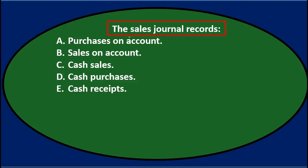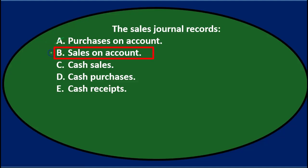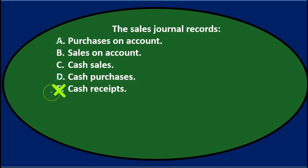So we can start and say, can we narrow this down if we're talking about sales? First, purchases on account — purchases is not really sales, so we can probably cross that out. Sales on account has sales in it, so that seems reasonable. Cash sales also says sales, so there are two that have sales — we'll keep that one. Cash purchases has no sales involved, so we can probably eliminate it. Cash receipts — no sale happened here; this is for a sale that happened in the past.